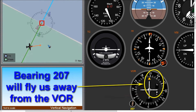Suppose I want to fly away from a VOR — same procedure. I first rotate my OBS knob until the needle is vertical and the To/From flag says From. Then I read out the bearing that I need, which in this case is 207. I can now change my heading to 207 and I will fly away from this VOR.